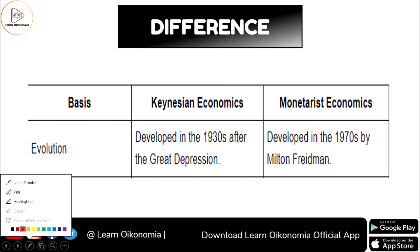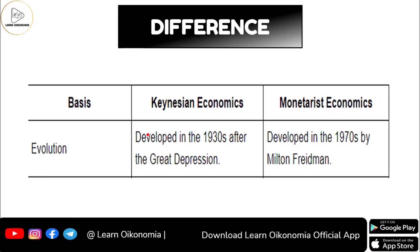Coming to the first kind of difference, we start with the evolution of both Keynesian economics and monetarist economics. Keynesian economics was something that got developed after the 1930s depression. It was Keynes who gave a set of ideas that worked against the classical ideas — Keynes was actually criticizing the classical ideas. As a result of the 1930s depression, the world found that following classical ideas was not a solution to recover from the Great Depression.